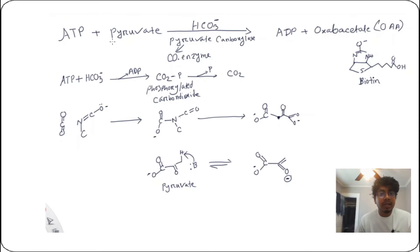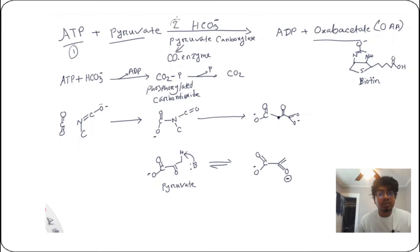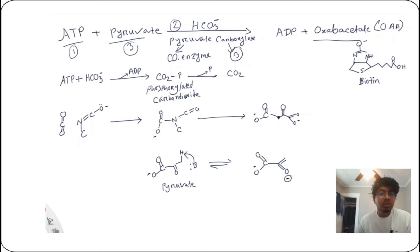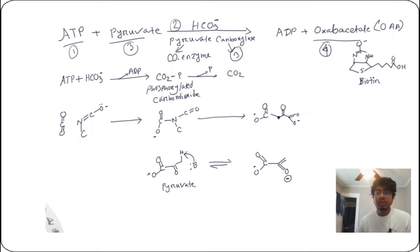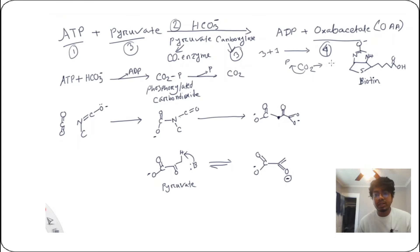Today I will show you how to convert pyruvate to oxaloacetate. To do that I need ATP and carbon dioxide. Pyruvate is a three-carbon molecule and oxaloacetate is a four-carbon molecule, so I need to add one carbon — three plus one — to produce four carbons. We cannot simply grab carbon dioxide and add it directly to pyruvate to produce oxaloacetate; we need to activate it first.